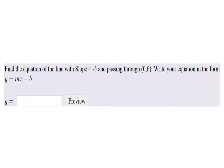Let me start that over, sorry. Find the equation of the line with slope negative 5 passing through (0, 6). Write it in slope-intercept form.